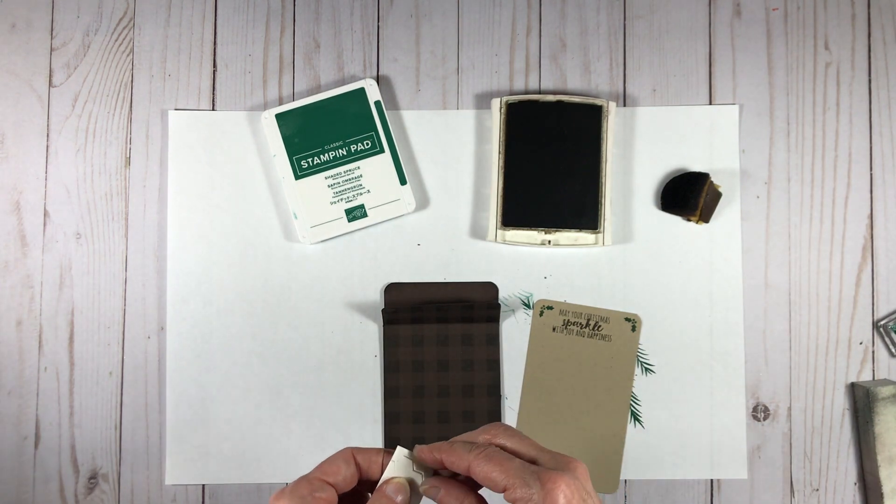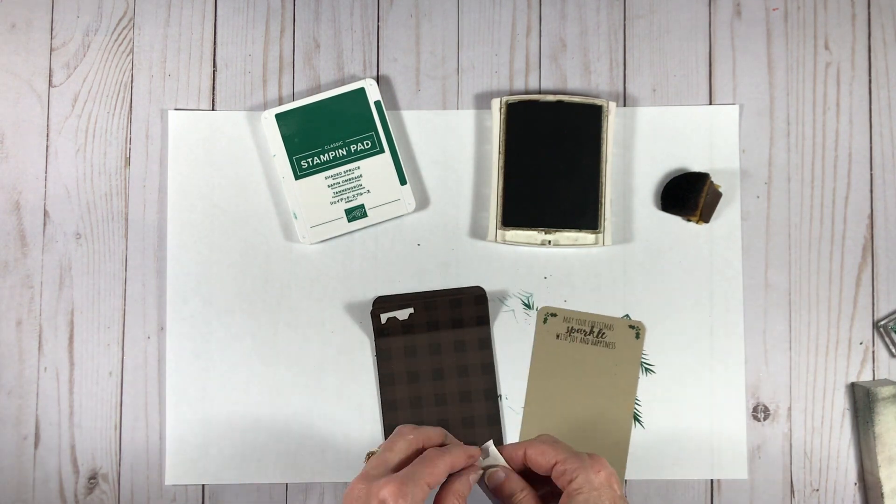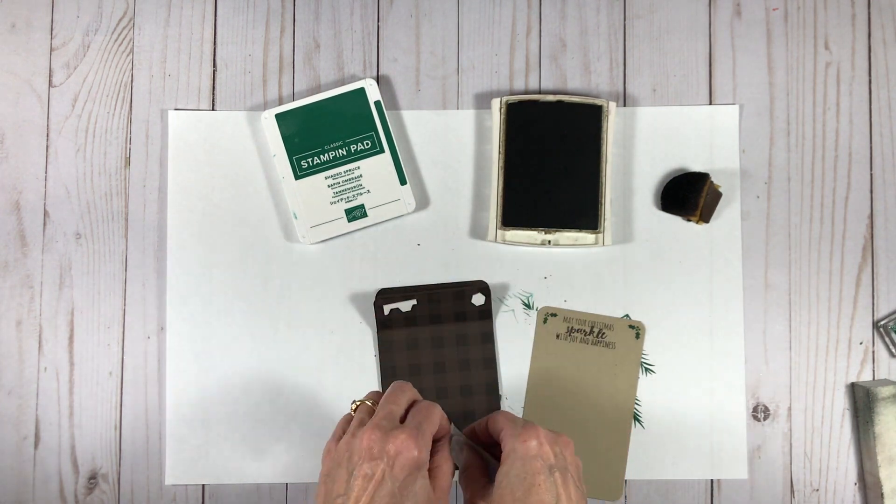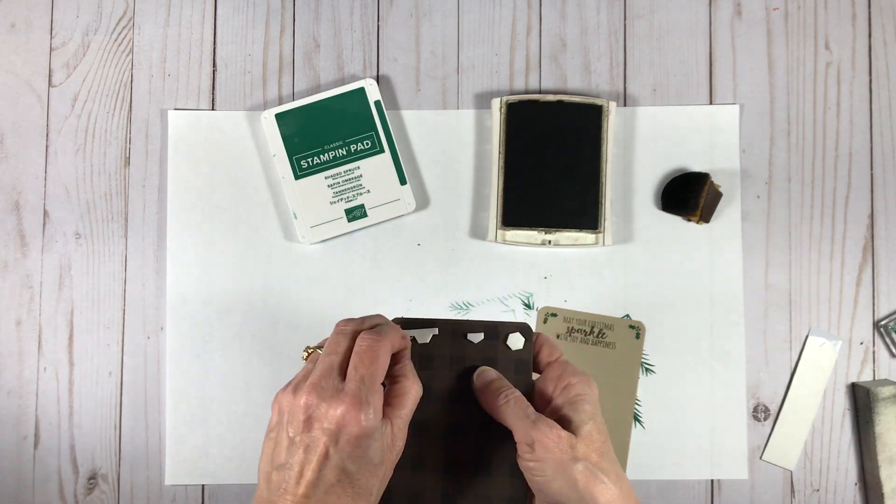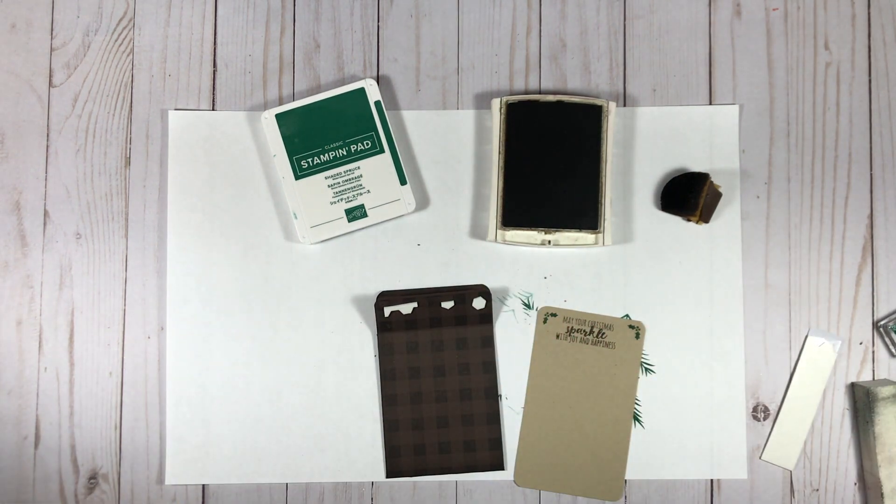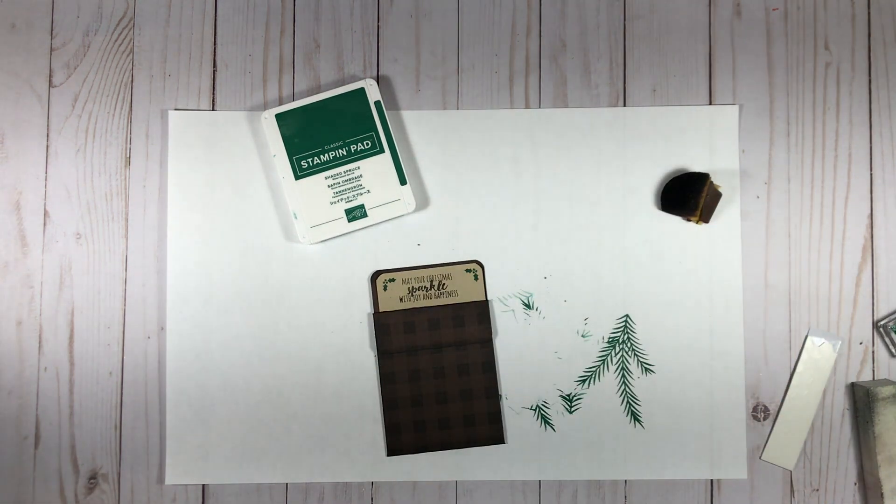So next I'm going to put some dimensionals on the back side of the flap. I wanted it to sort of stand up a little bit so you could see the edge a little bit more, and the sponging also helps to see the edge a little bit more. I'm just going to go ahead and attach that flap down and then my pocket is all set, created and ready to go.